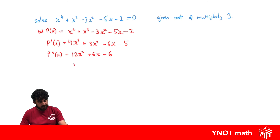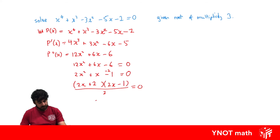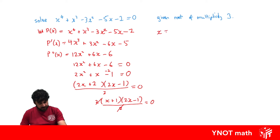Setting p''(x) = 0 and dividing by 6 gives us a quadratic to solve. Factorizing: since we have 2x^2, we write (x+1)(2x−1)/2 = 0 — looking for factors that multiply to −2 and add to 1, which are +2 and −1. This gives us x = −1 or x = 1/2 as roots of the second derivative, and one of these has multiplicity 3.